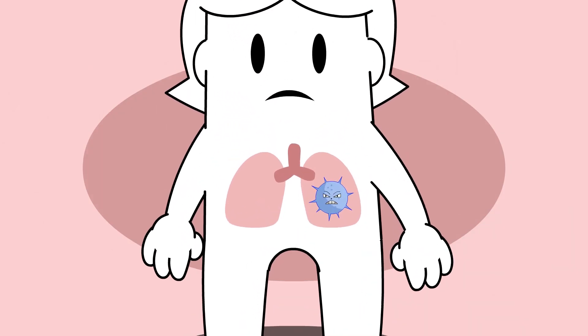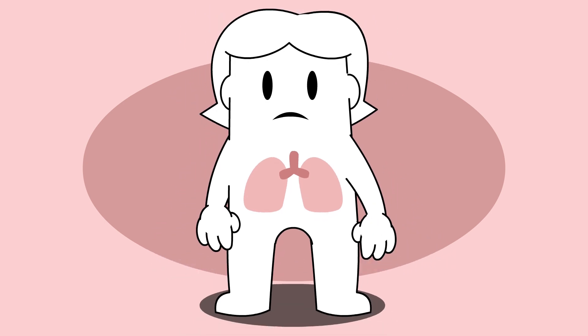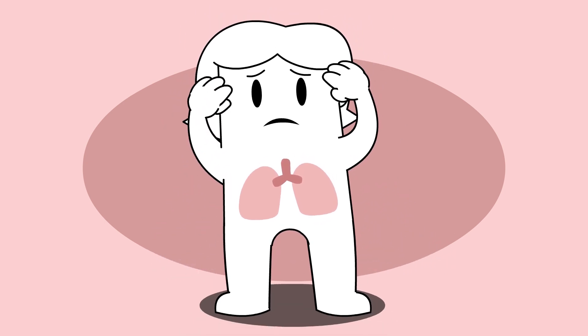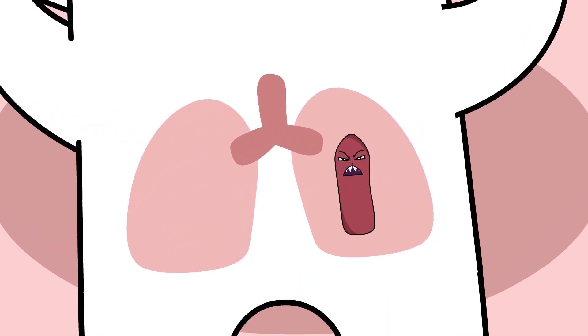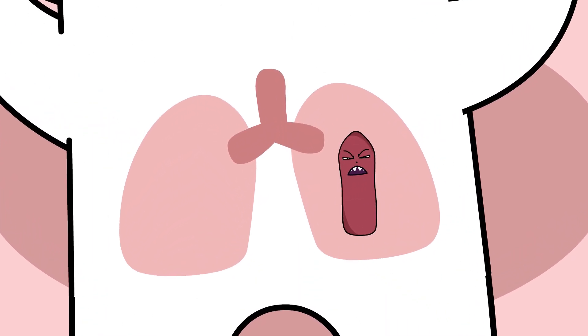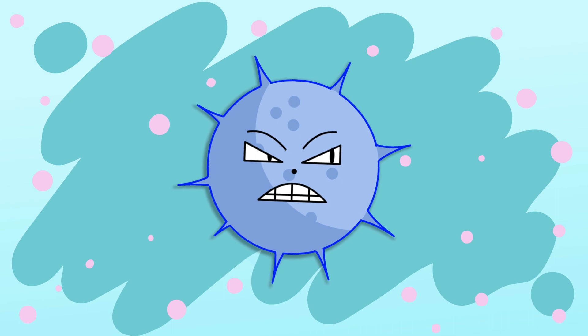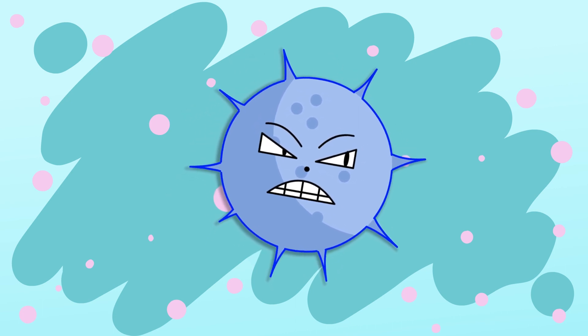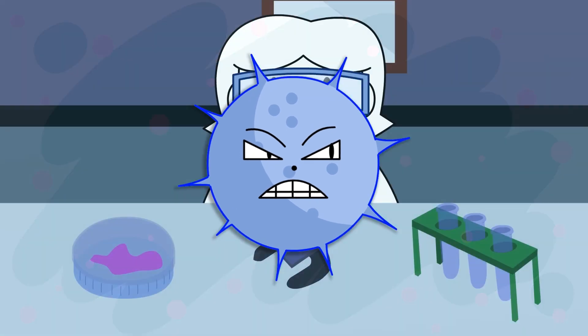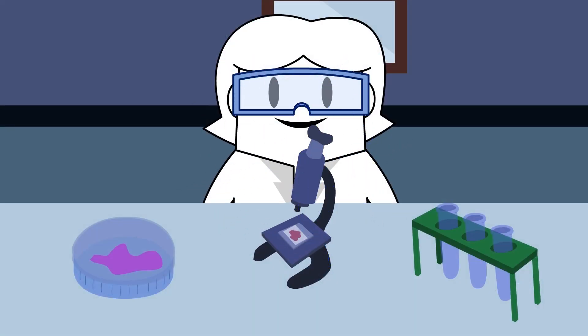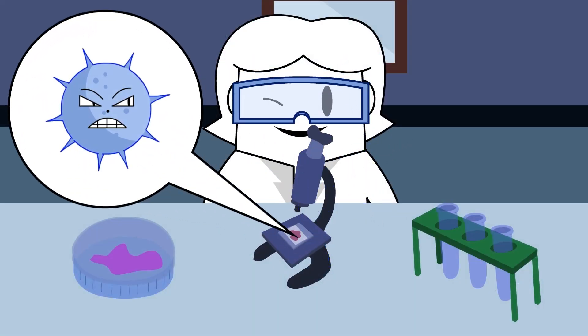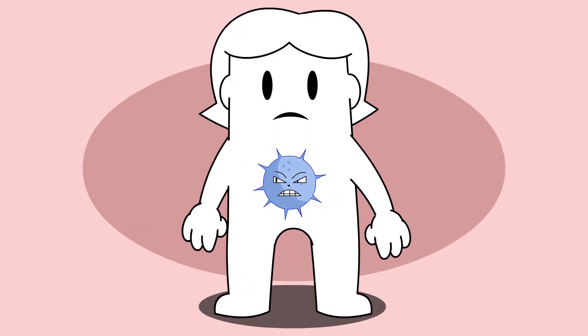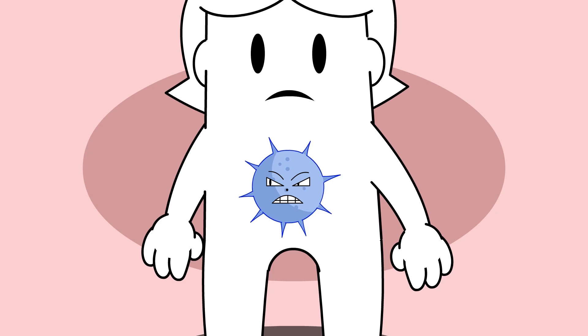For people living with HIV, especially those not taking HIV medications, the risk of developing active TB disease is considerably higher than for persons with other conditions. Remember this character? It represents HIV. HIV is very small and can only be seen with a special type of microscope. In this animation, we show it much larger than it actually is, so you can easily see the virus.